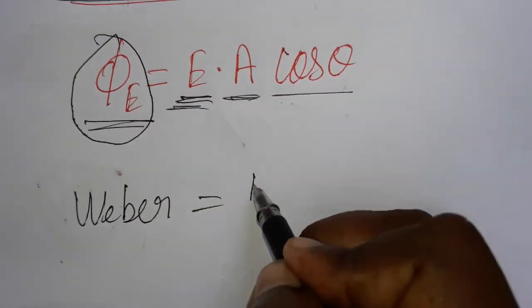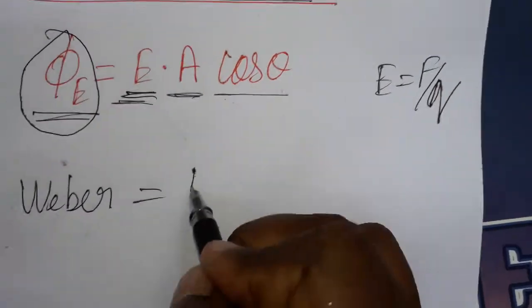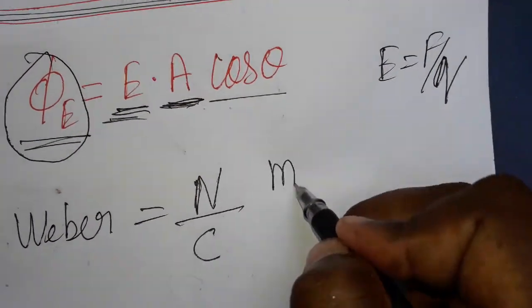Electric field is force per unit charge, so we can take it as newton per coulombs. Area is length into breadth, we can take it as meter square.